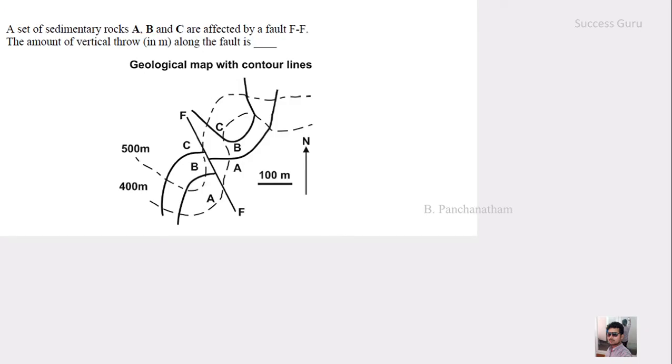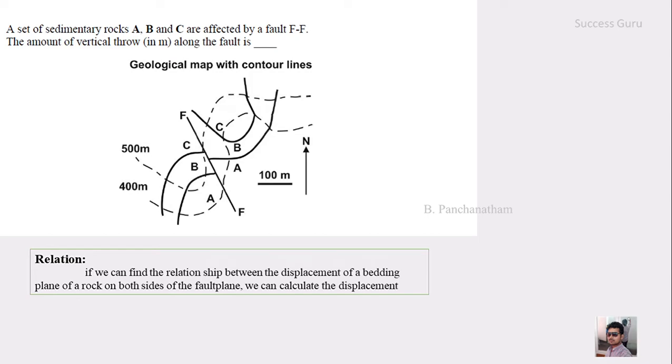And the next question is also a geological map in which they are given a fault. And you have to find out the vertical throw of the fault. The first thing is that, if you can trace a single outcrop on both the sides of the fault plane, we can simply measure the throw. Say for example, let this be the first strike.